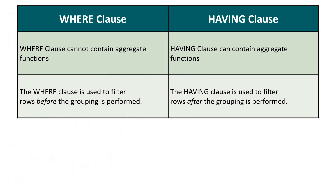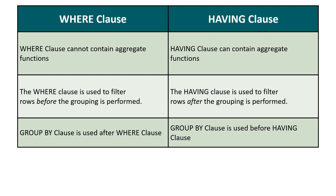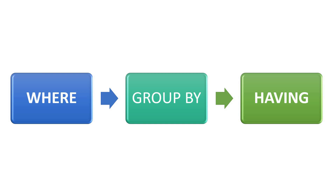Our next difference is: the where clause is used to filter rows before grouping is performed, while the having clause is used to filter rows after grouping is performed. The where clause doesn't need any grouping, but for the having clause, grouping is a must — it only works after grouping is done. The group by clause is placed after the where clause but before the having clause. If your query has all of them, the order is: where clause, then group by, then having clause.